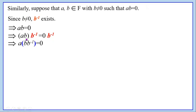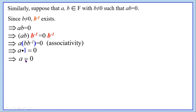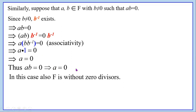Therefore, a·(b·b⁻¹) = 0. We know b·b⁻¹ is the identity. Therefore, a·1 = 0. Since 1 is the identity, a·1 = a. So a = 0. Thus, we took a·b = 0 and showed a = 0. In this case also, f is without zero divisors.